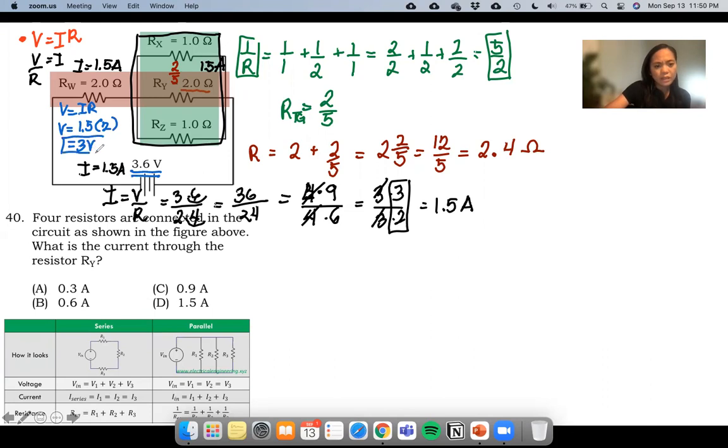Therefore, if this is 3 volts, this circuit is experiencing 3 volts. This whole green circuit is only experiencing volts that is 0.6. How did I know that? Because we only have 3.6. 3 went here, so 0.6 went to this green part.